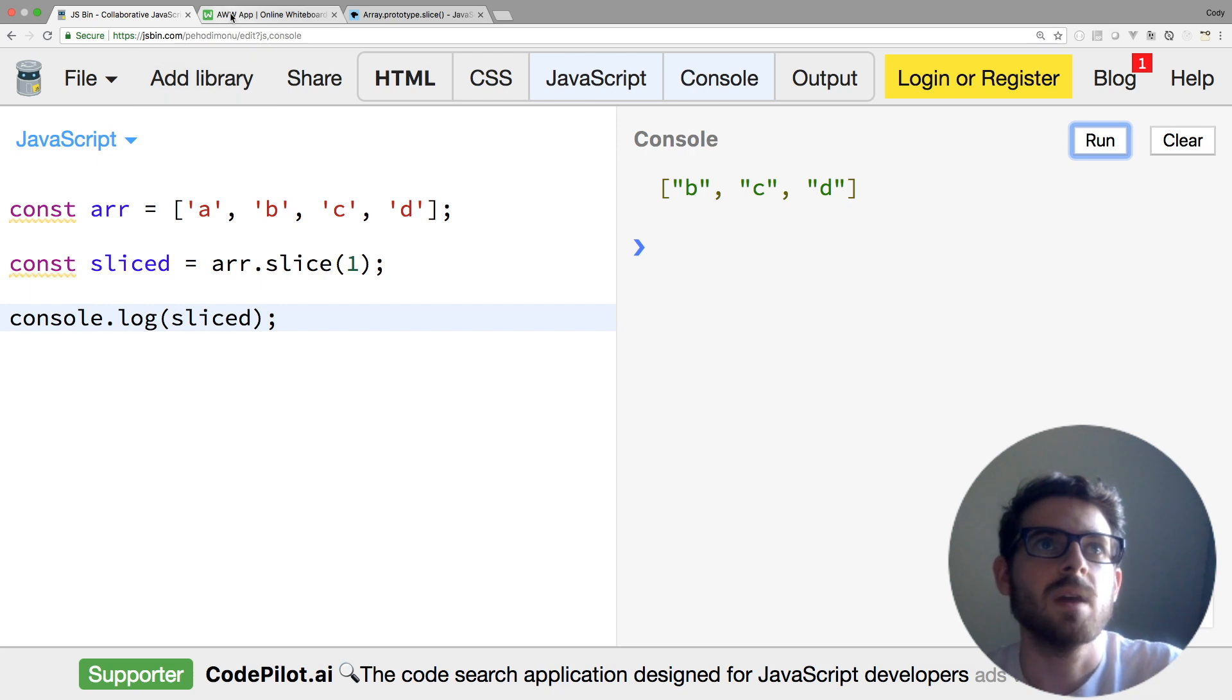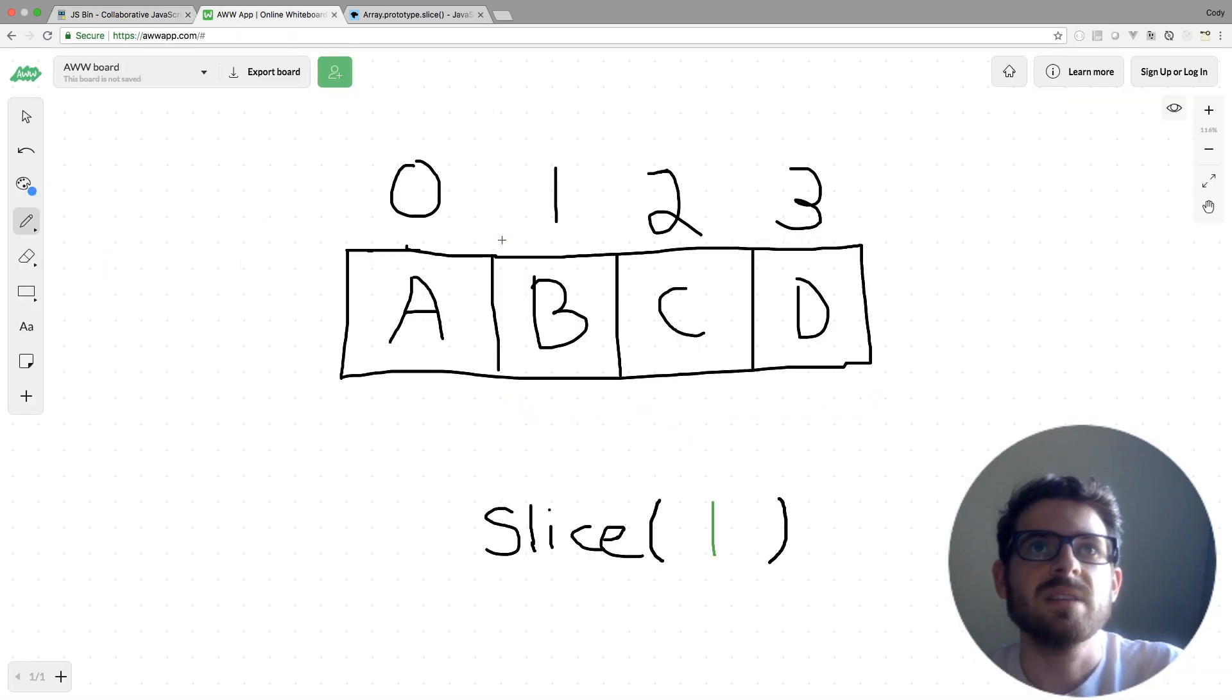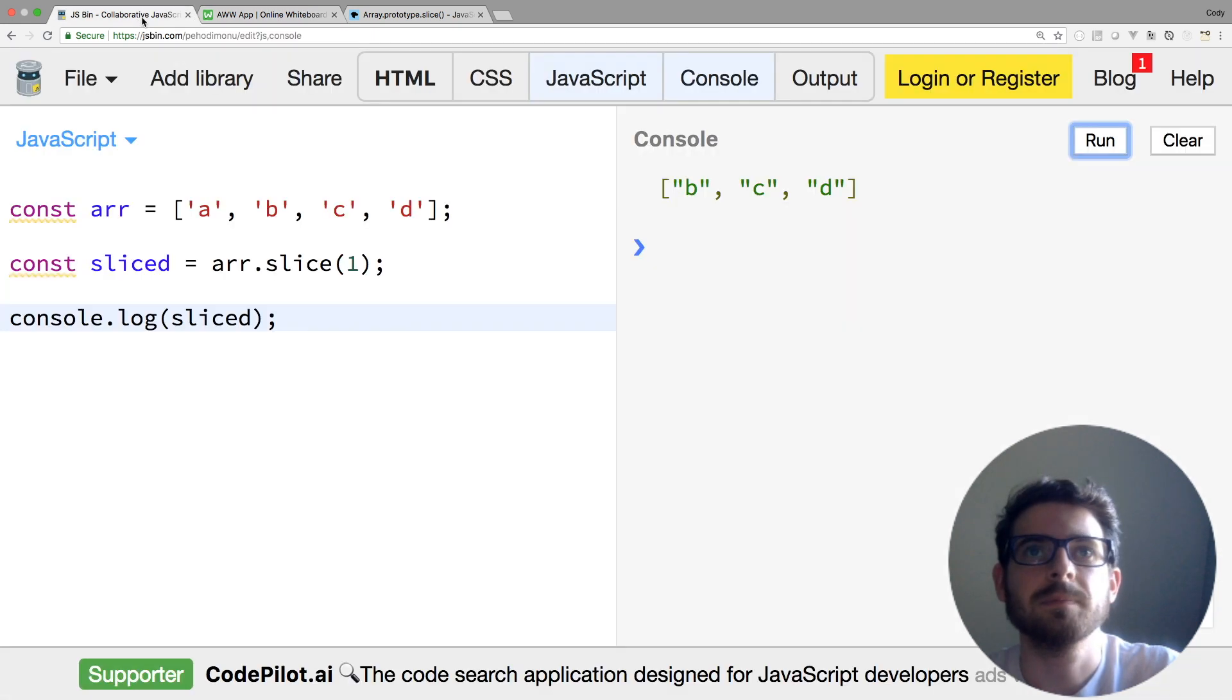All right, so that's pretty cool. Let's try a couple of other examples. Let's say we wanted to grab only this element D. What would we do? Well, obviously you just put the index that you want and that will grab starting at the index. So if I wanted to start here and grab everything after, we could just put a three here. That's only going to grab us the D. So if I go back to JS bin, change slice to a three and run this, notice that we get back a D.